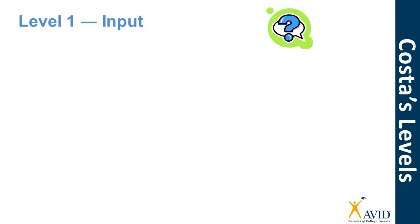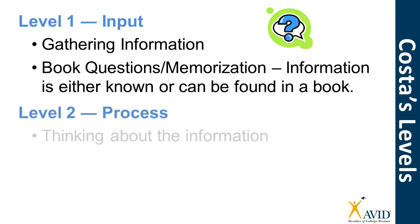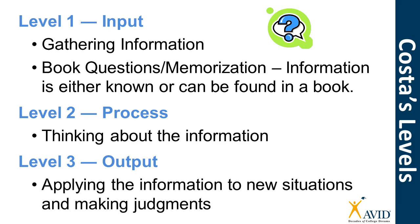Let's look at these levels a bit more closely. Level one tasks are input tasks — they are easy and involve very little thinking. They might include gathering information, book questions, and memorization, where the information is either known or can be found easily in a book or on a website. Level two tasks are a bit more involved; they involve processing and thinking about the information you gathered in level one. Level three is an output level, meaning you're going to take the information you've gathered and thought about and create something. You're going to apply the information to a new situation and make judgments about what you've learned.